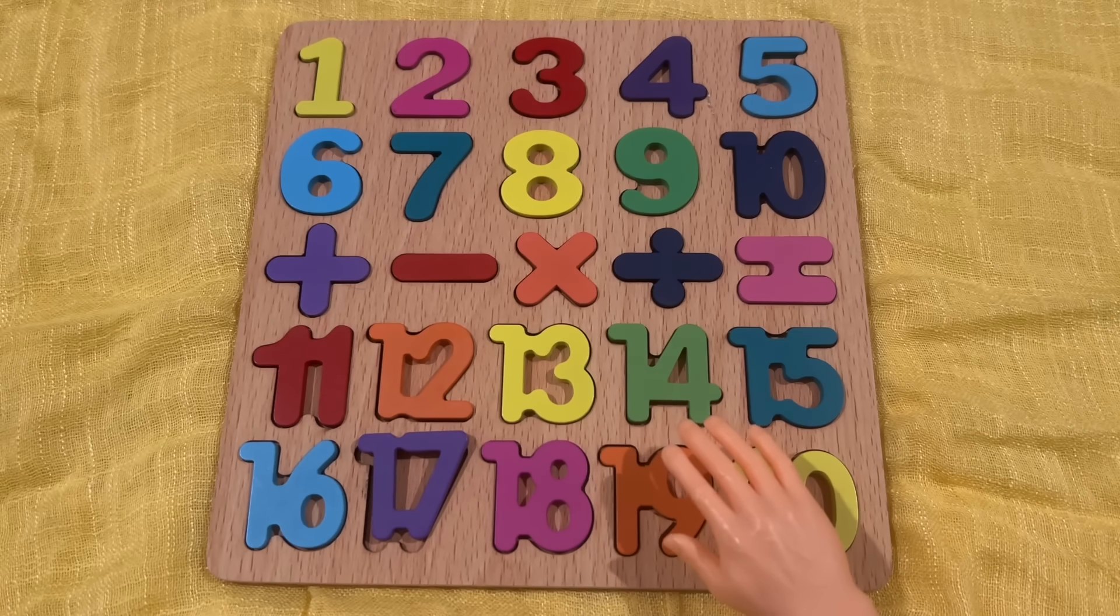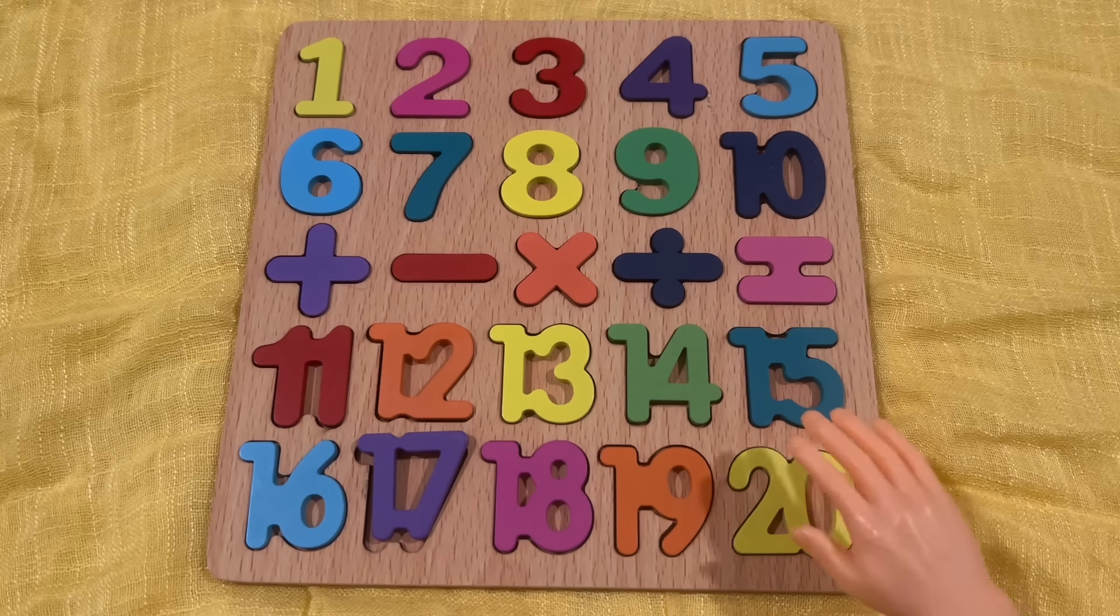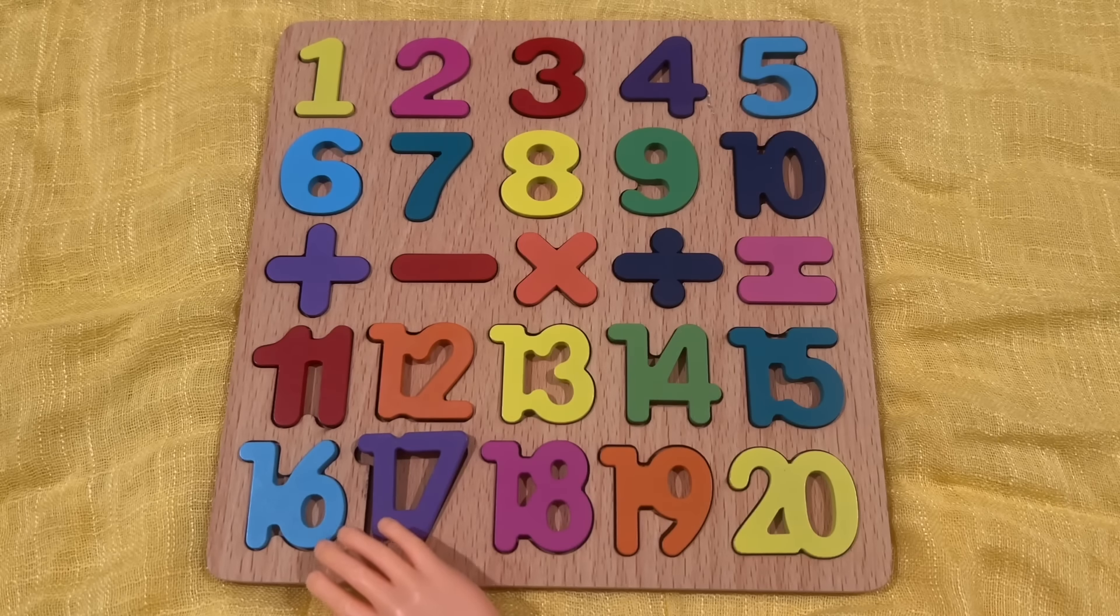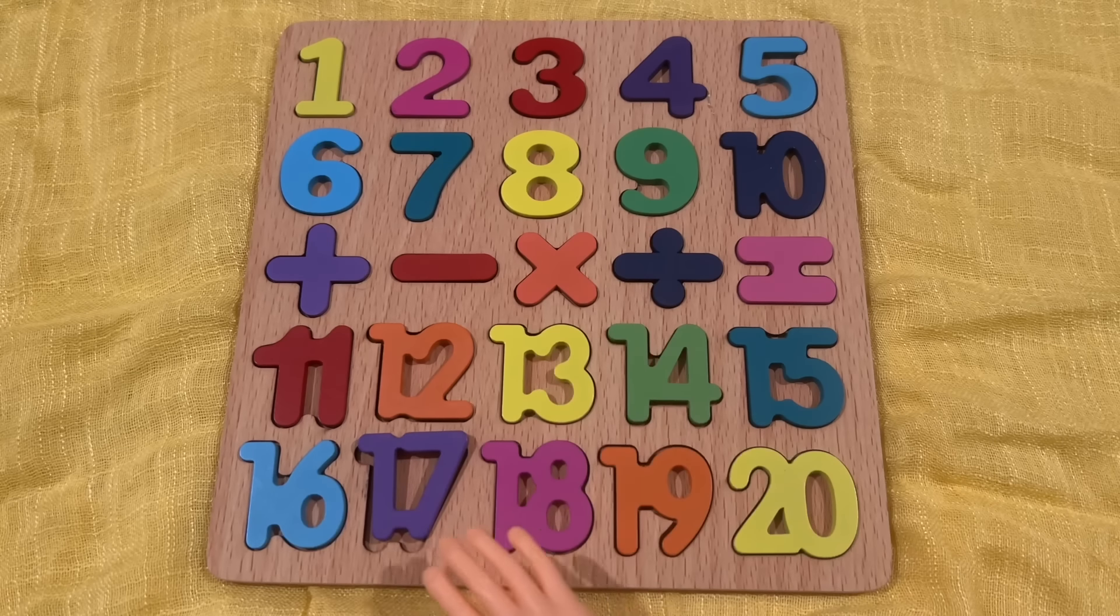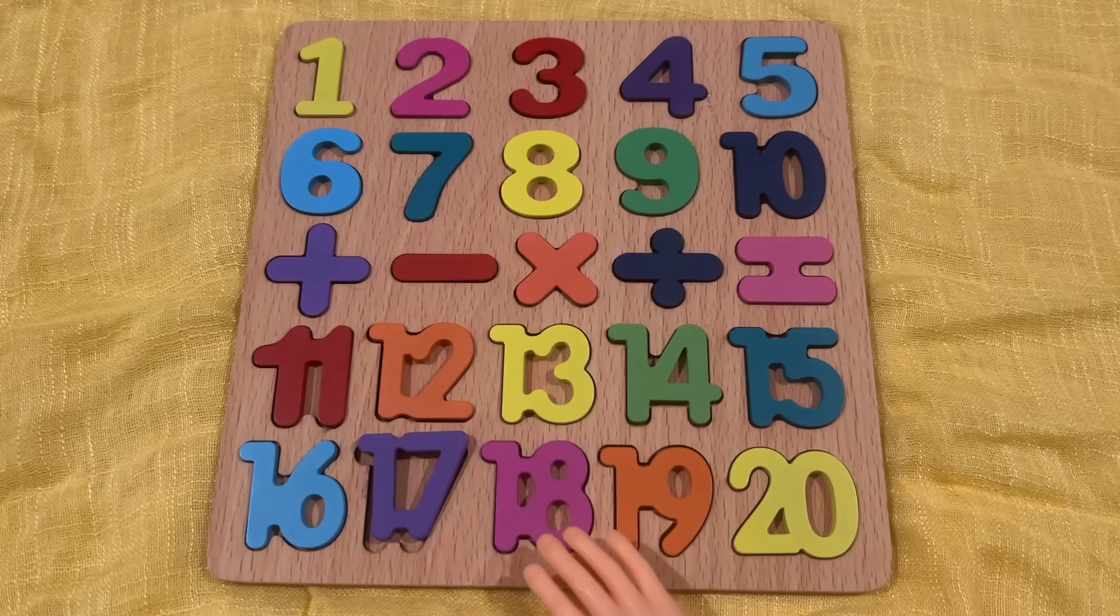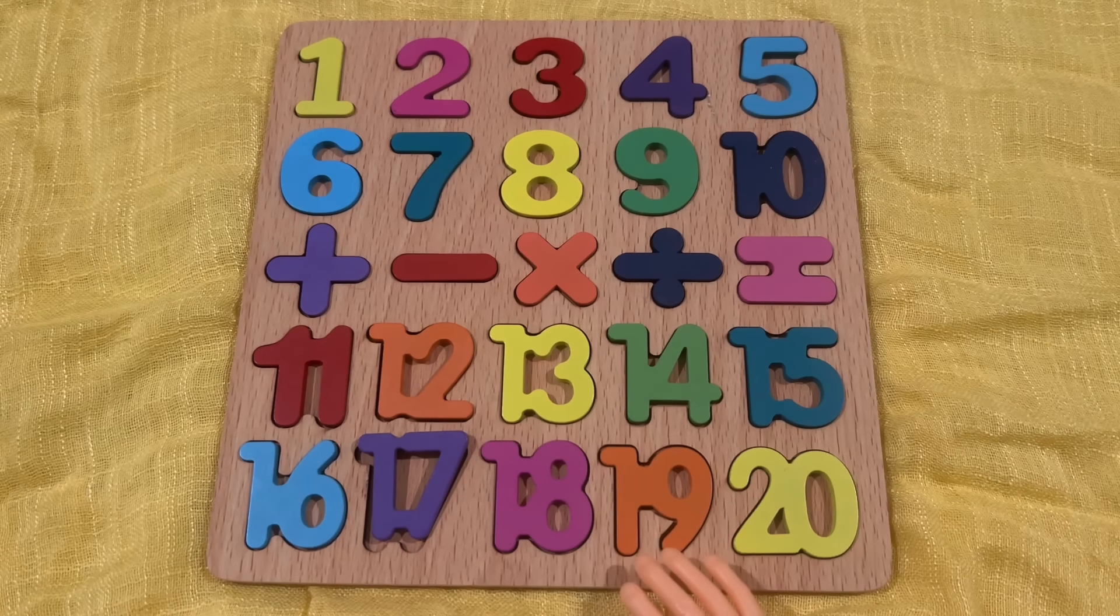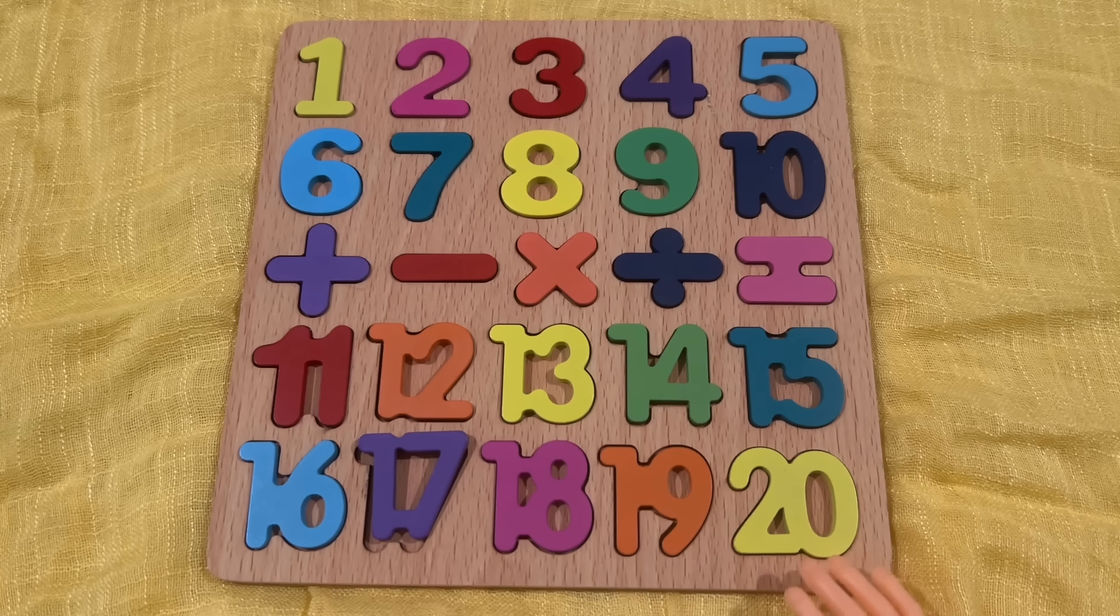I hope you guys enjoyed this lesson today. Why don't we review just a simple naming of the numbers. One, 일. Two, 이. Three, 삼. Four, 사. Five, 오. Six, 육. Seven, 칠. Eight, 팔. Nine, 구. Ten, 십. 11 is 십일. 12, 십이. 13, 십삼. 14, 십사. 15, 십오. 16, 십육. 17, 십칠. 18, 십팔. 19, 십구. 20, 이십.